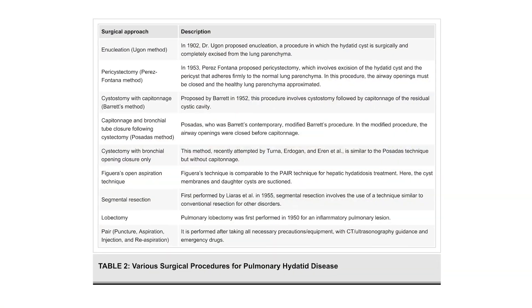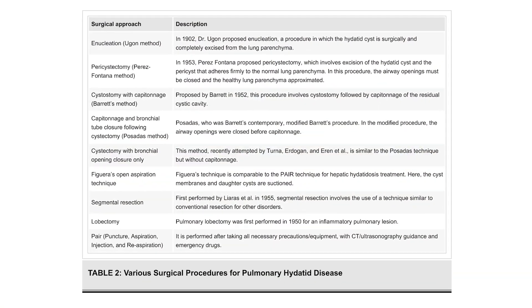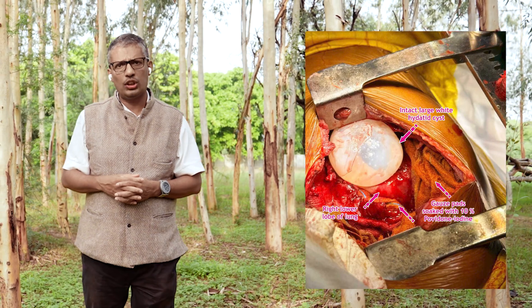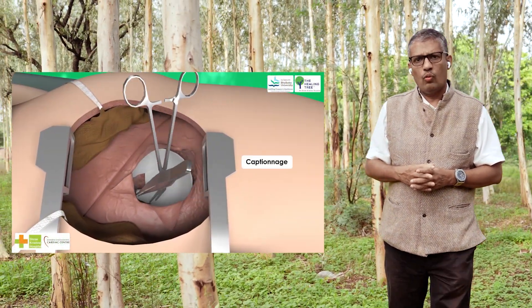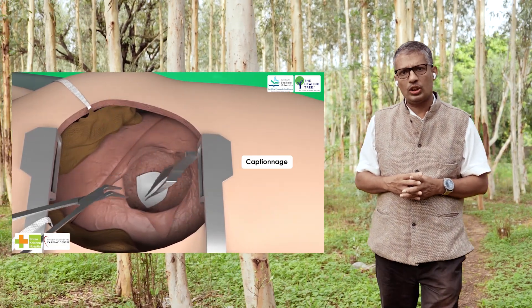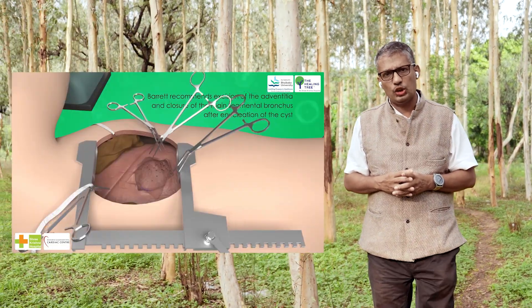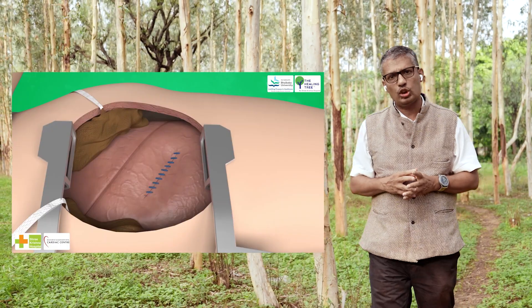Pulmonary hydatid cysts are typically treated with surgery. Our case report, published in the Cureus Journal of Medical Science, outlines the various surgical procedures available. We employed Barrett's method, which involves intact removal of the hydatid cyst and closure of the bronchial openings using Posada's modification. The cyst space was obliterated via capitonnage after closure of the bronchial openings and surrounding tissues using 2-0 Vicryl sutures.